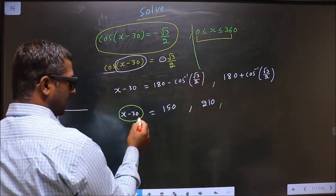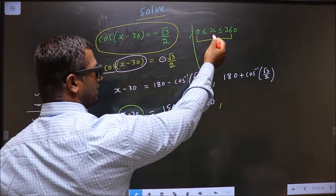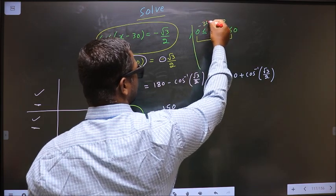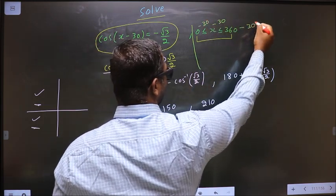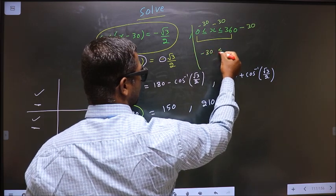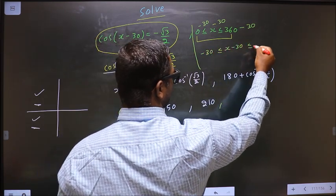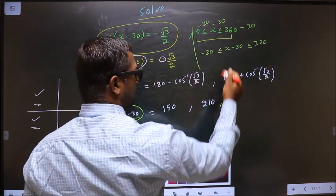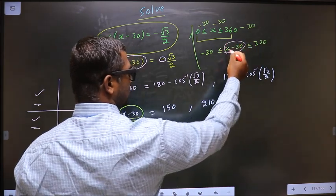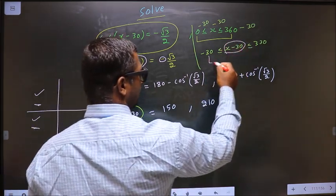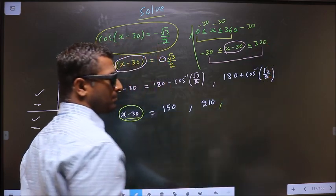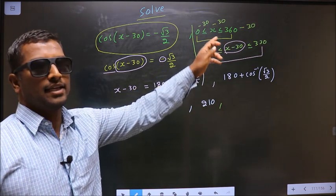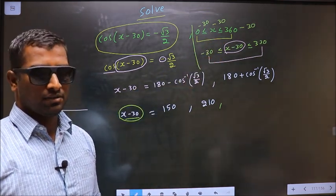Here we should get x - 30. Here we have x, so I subtract 30 degrees everywhere. So I get -30 ≤ x - 30 ≤ 330. So now values for x - 30 should lie in this interval. Then automatically values for x lie in the given interval. Understood? Okay.